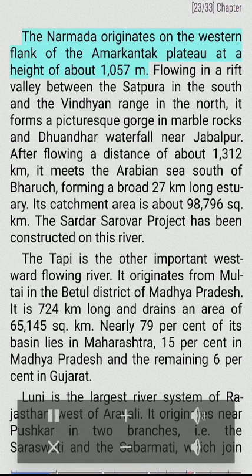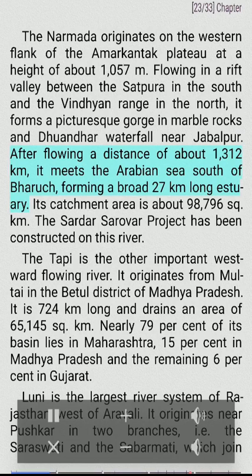The Narmada originates on the western flank of the Amarkantak plateau at a height of about 1,057 meters. Flowing in a rift valley between the Satpura in the south and the Vindhyan range in the north, it forms a picturesque gorge and the marble rocks and Dhuandhar waterfall near Jabalpur. After flowing about 1,312 km, it meets the Arabian Sea south of Bharuch, forming a broad 27 km-long estuary. Its catchment area is about 98,796 sq km. The Sardar Sarovar project has been constructed on this river.